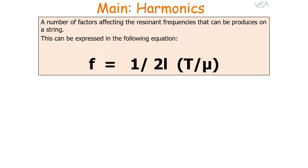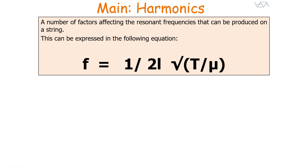We can link these factors into one equation: f is equal to 1 over 2L, multiplied by the square root of T over μ.